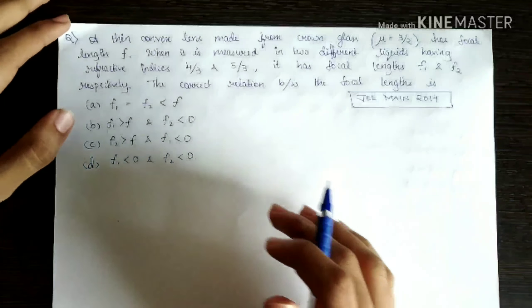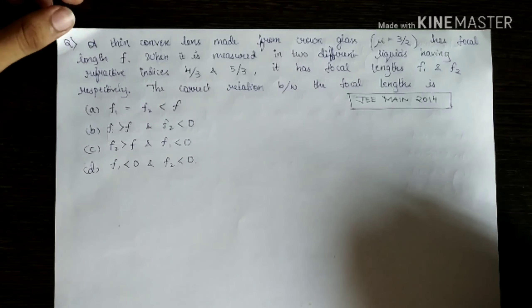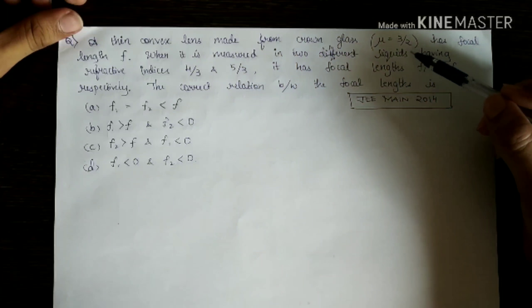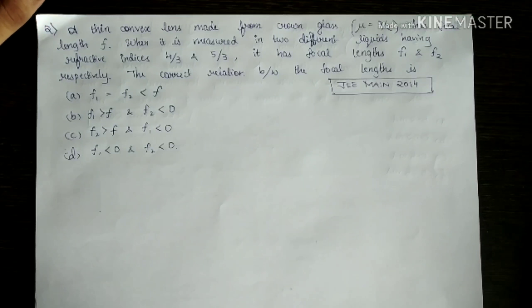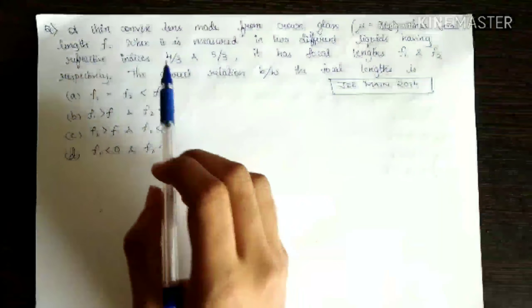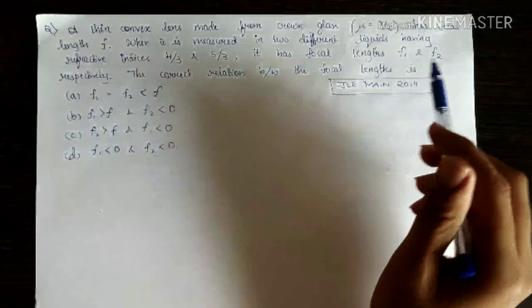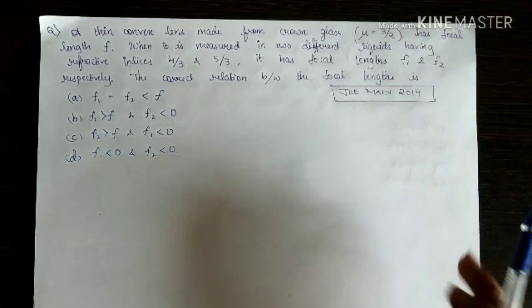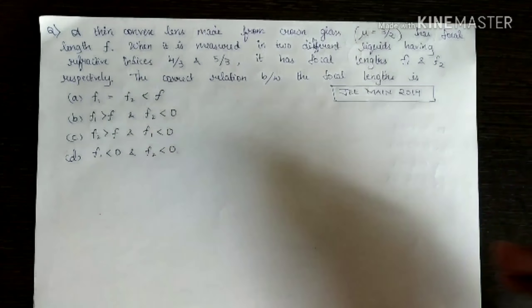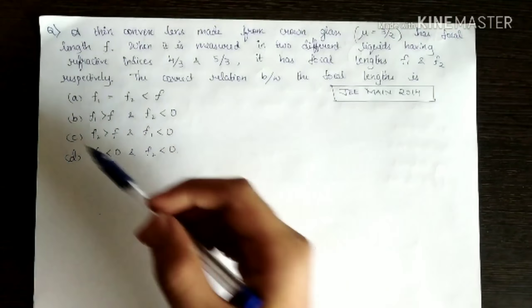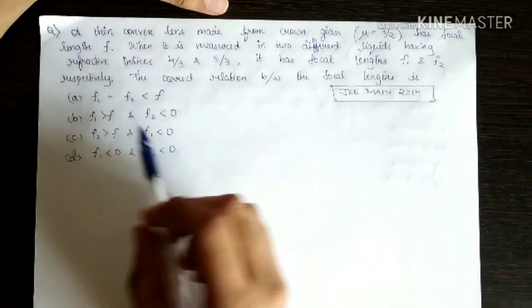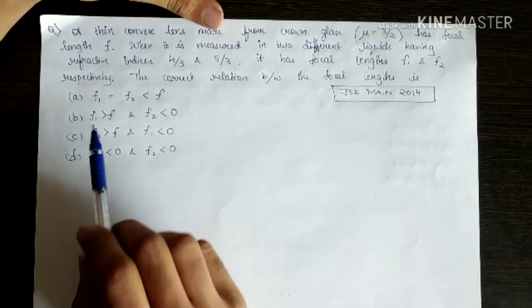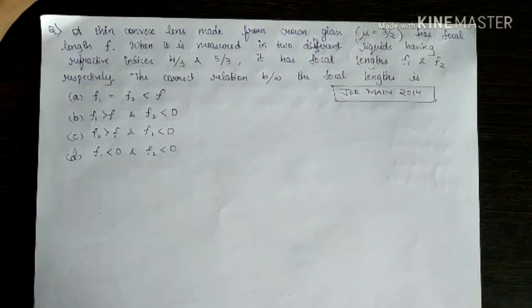The next question says, a thin convex lens made from crown glass of refractive index 3/2 has focal length F. When it is measured in two different liquids having refractive indices 4/3 and 5/3, it has focal lengths F1 and F2. You obviously know when we put it in a medium, the focal length changes. And respectively, the correct relation between the focal lengths is what we want. We want the relation between F1, F and F2. How do we do it?